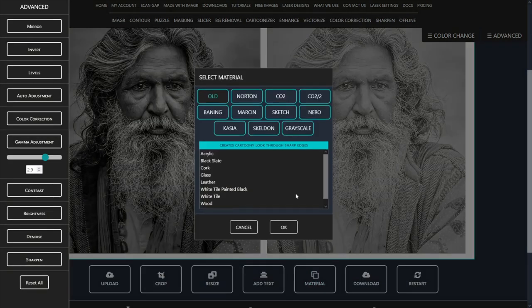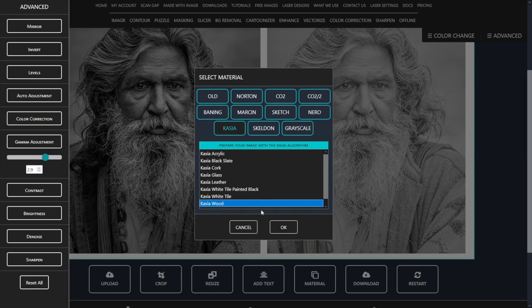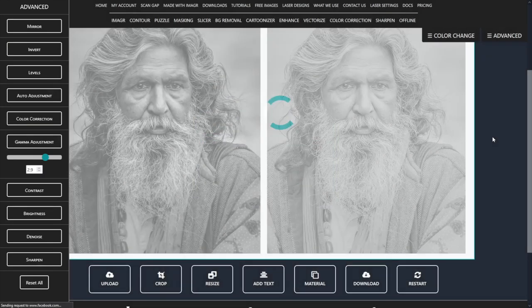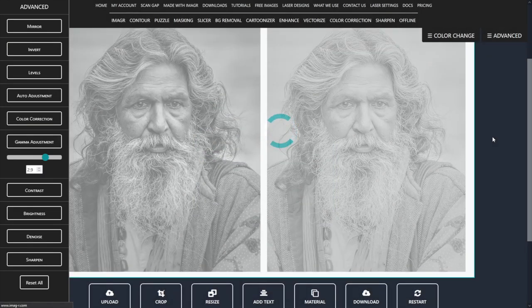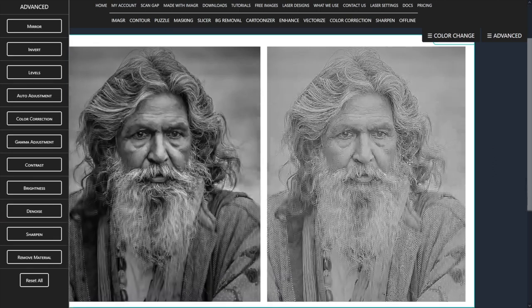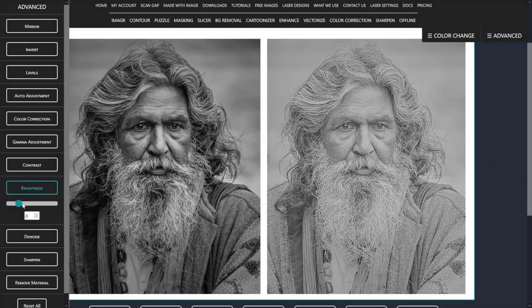Now we can choose our algorithm. In my case it's the Kasia wood algorithm as it works perfectly with my 80 watt CO2 laser. Increase brightness a little to make the very bright whites pop more.